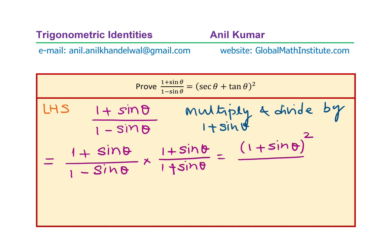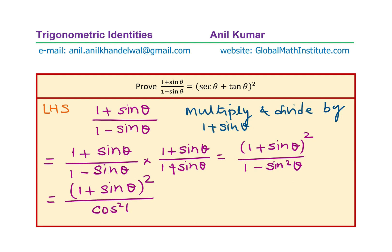When you do that you get 1 minus sine squared theta in the denominator. Now what is 1 minus sine squared theta? Well, it is cos squared theta. So I could write this as 1 plus sine theta whole square divided by cos squared theta.